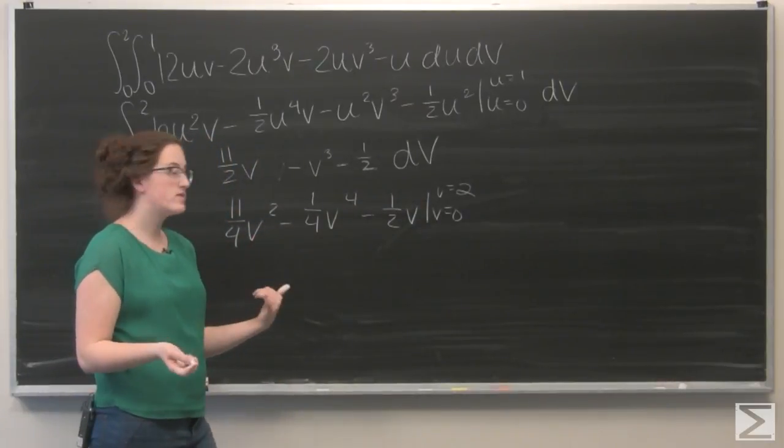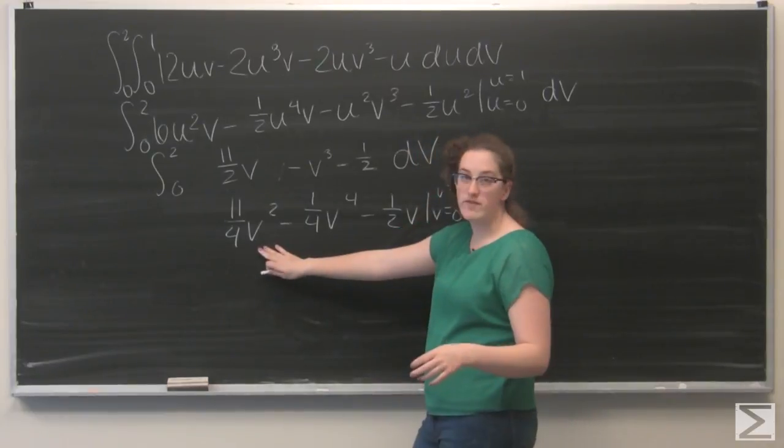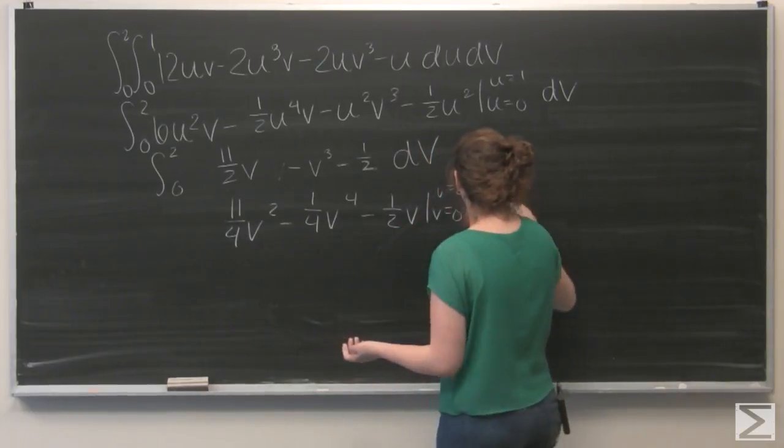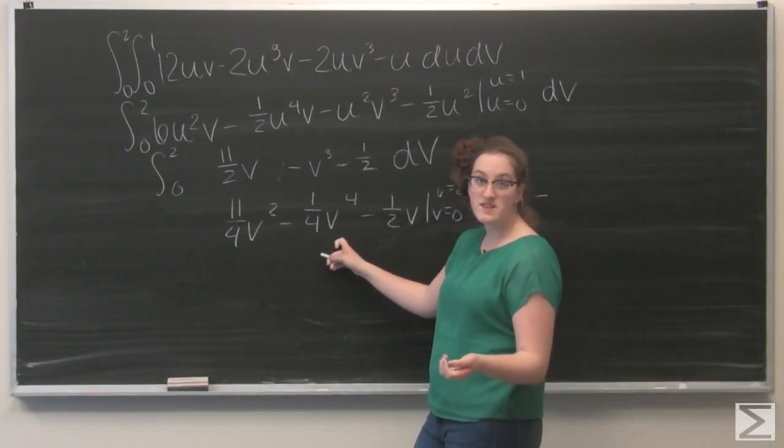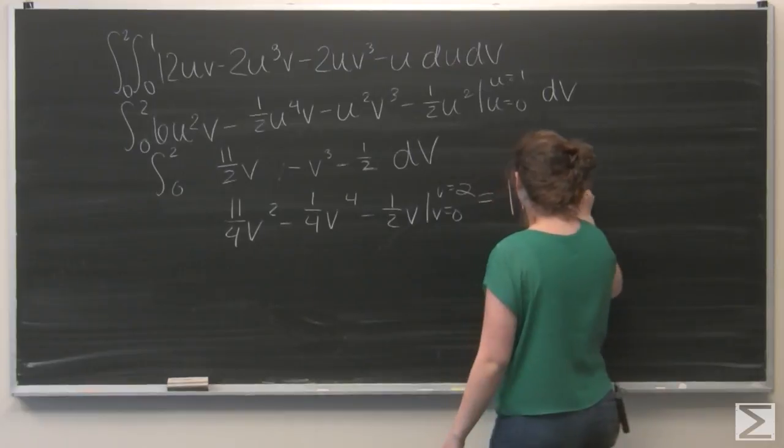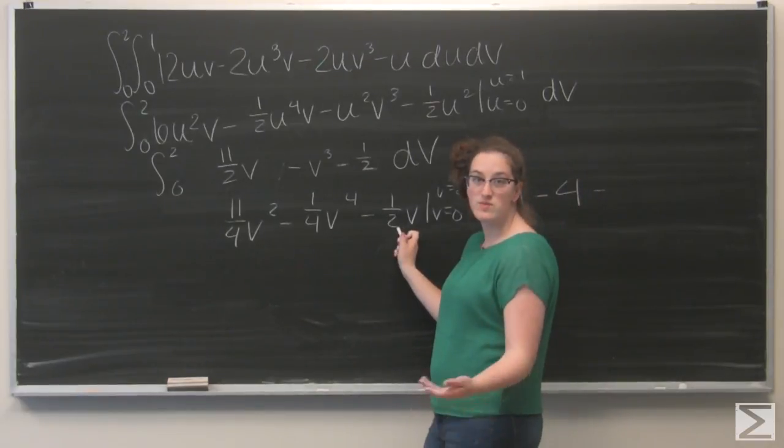I'm going to evaluate from v equals 0 to v equals 2. So, let's go ahead and plug in a 2 everywhere I see a v. So, first off, I have 11 fourths times 4, which is just 11. Minus 1 fourth times 16, which is just 4. Minus 1 half times 2, which is just minus 1.